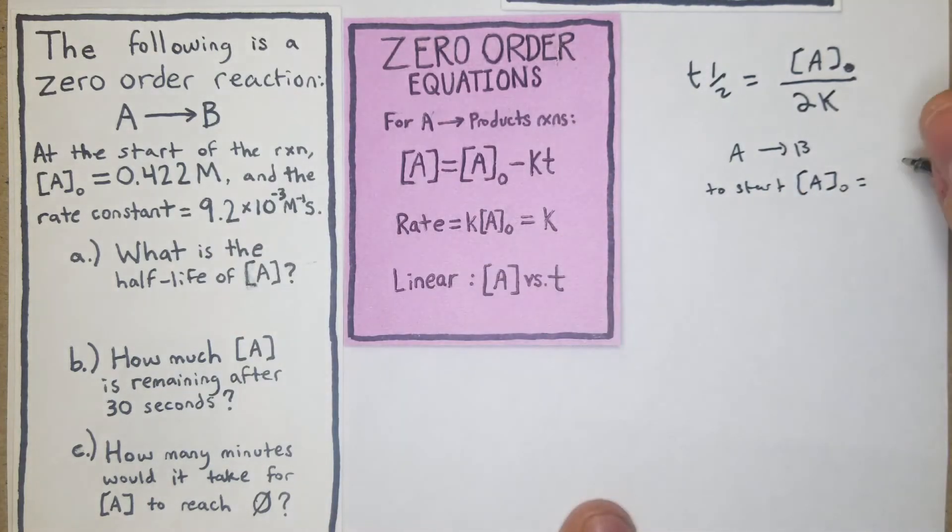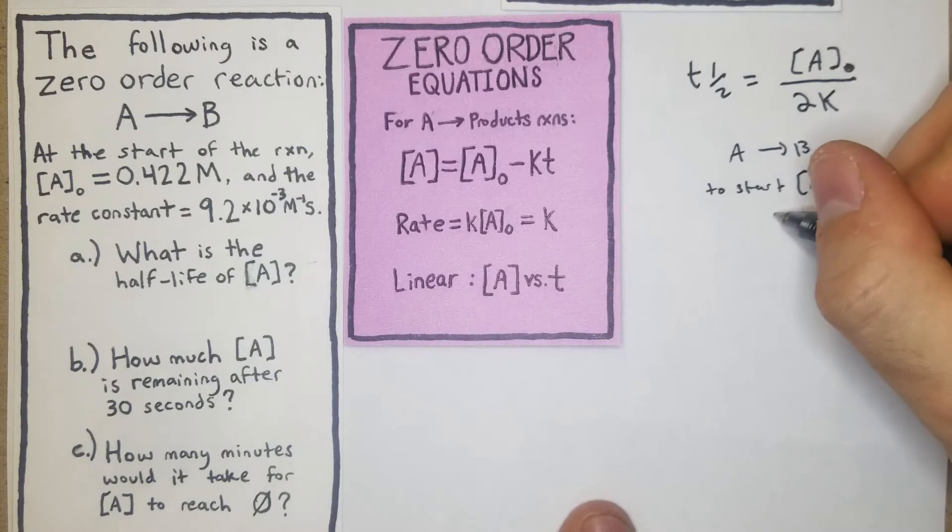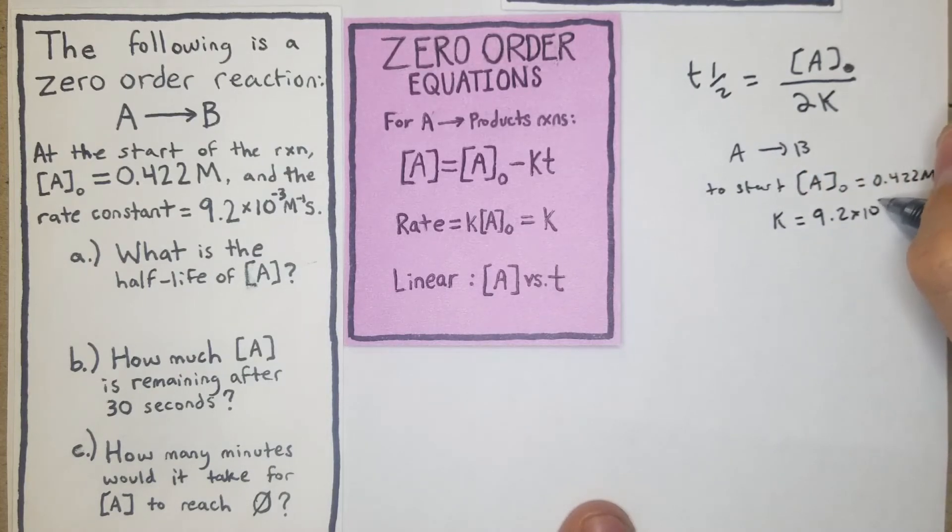So first off from there we can say, what did we have? We had A yields B, and then to start we had our [A]₀ was given to us as 0.422 molar, and then we have our K, our rate constant, is going to be 9.2 × 10⁻³ M⁻¹s⁻¹.